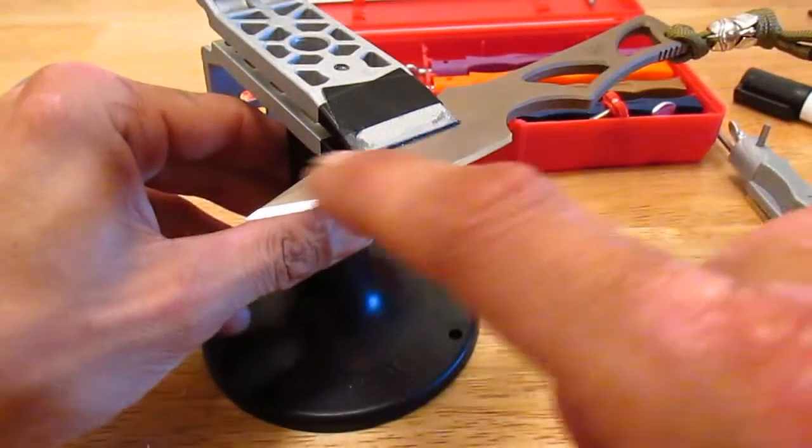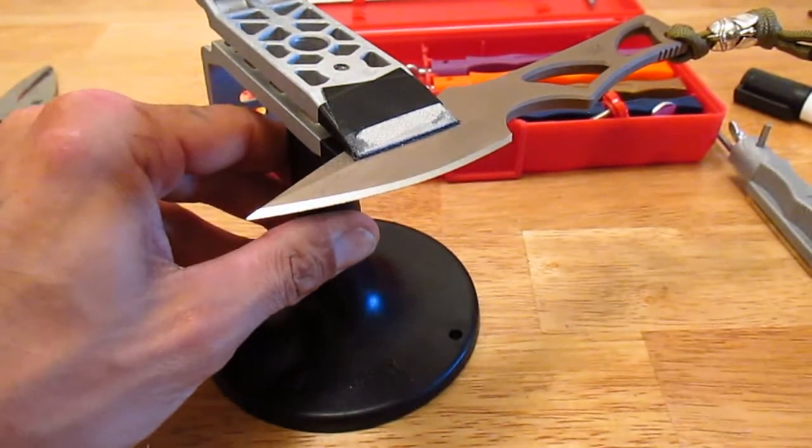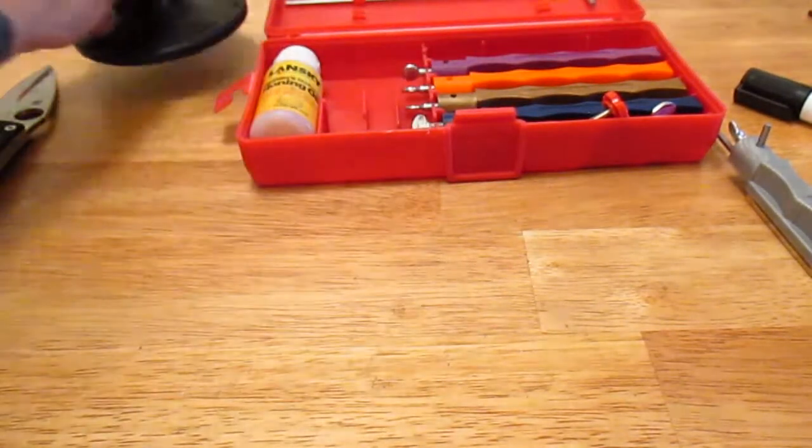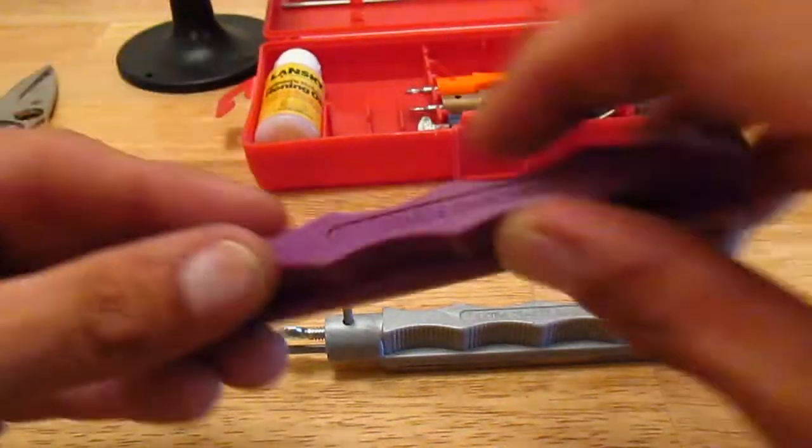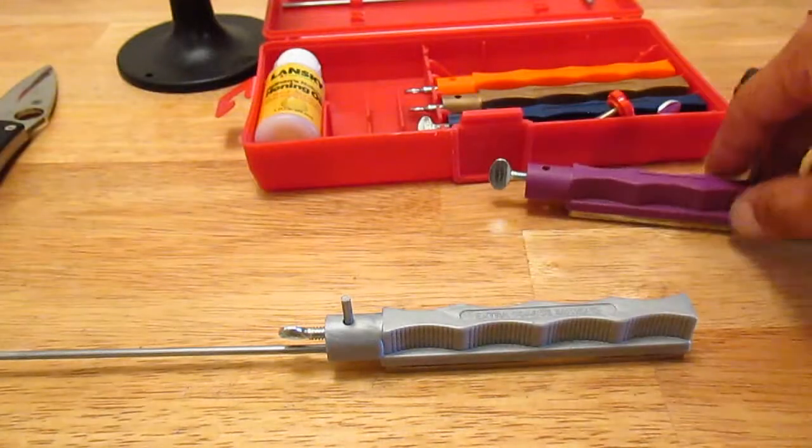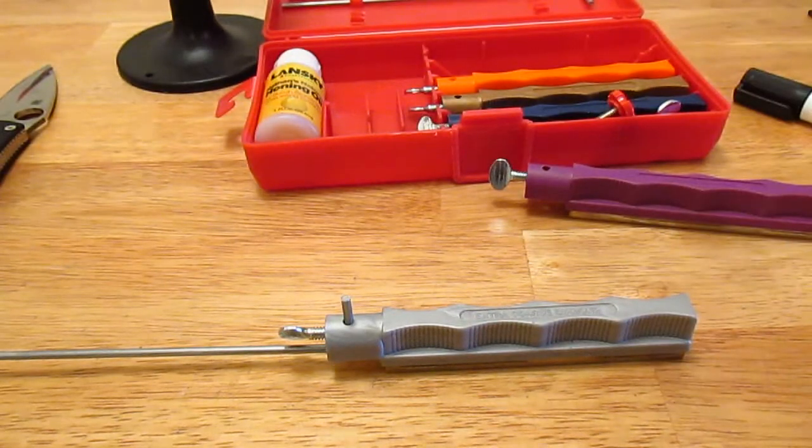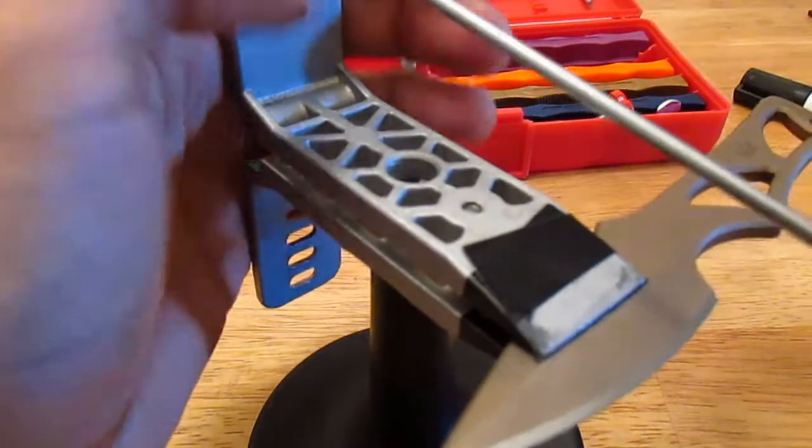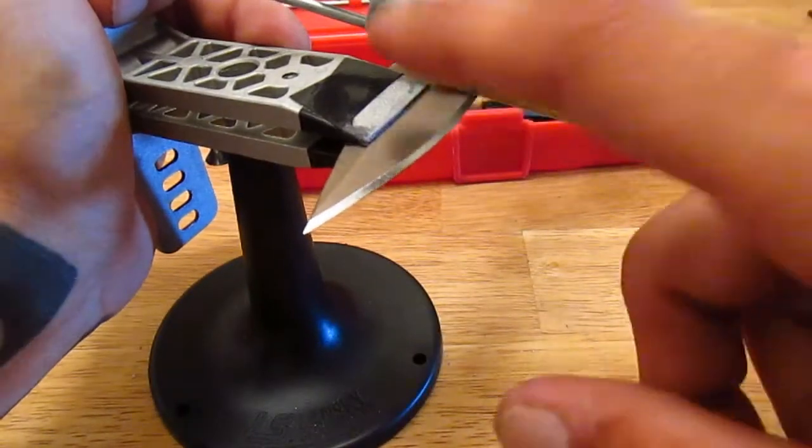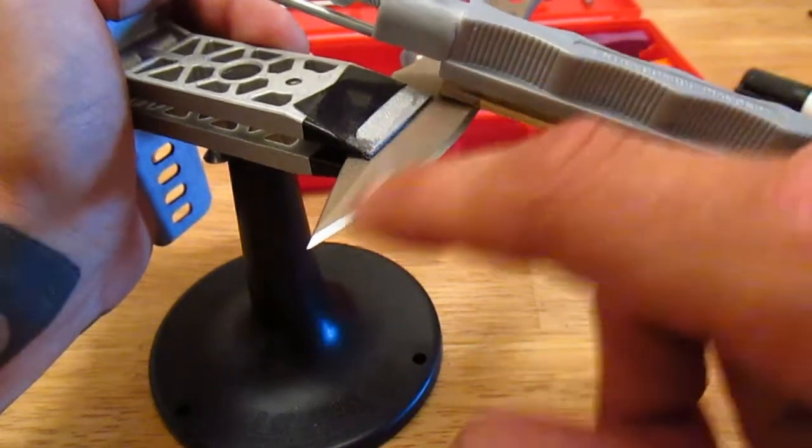Once that whole black part's removed, I'll take off this extra coarse stone and I'll put on the coarse stone and do that process. Just as an example of what to do moving through the stones, once the angle and the actual bevel is at the angle you want...